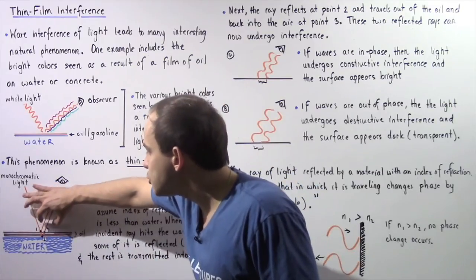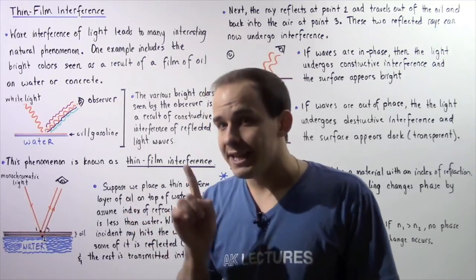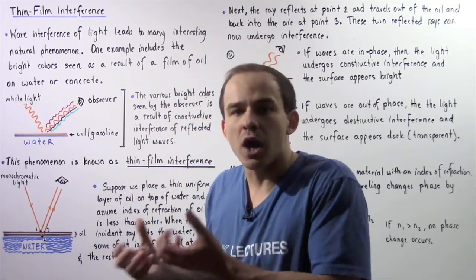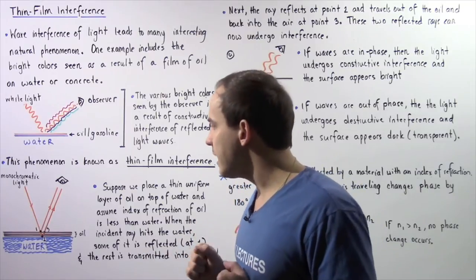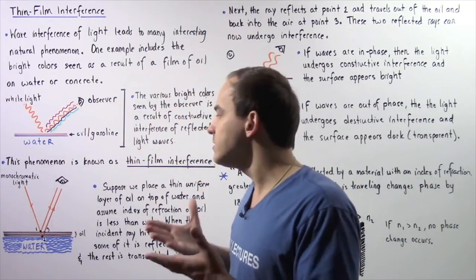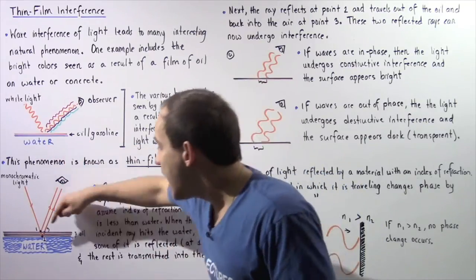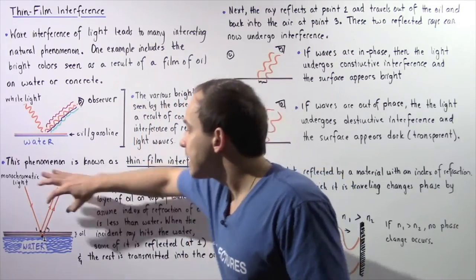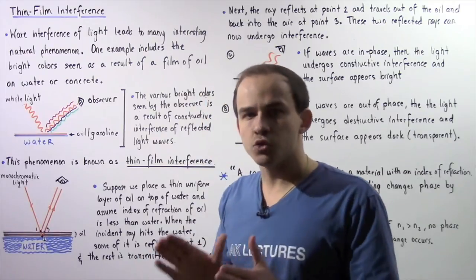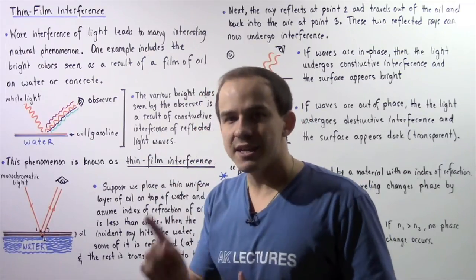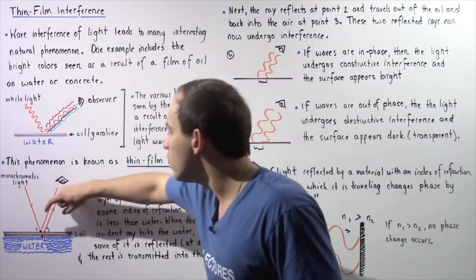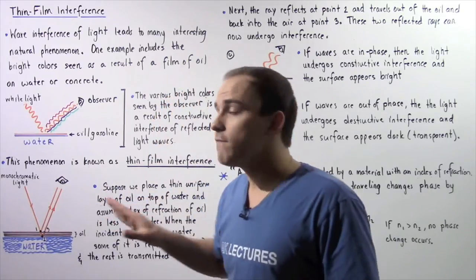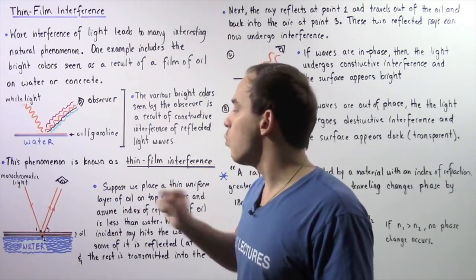The reflected ray will continue to travel and eventually leave the oil and enter the air at point three. If these two rays of light are completely in phase with respect to one another, constructive interference will take place and the observer will see a bright spot on this section of the oil. However, if destructive interference takes place, the person will see a dark spot on this section of the surface.